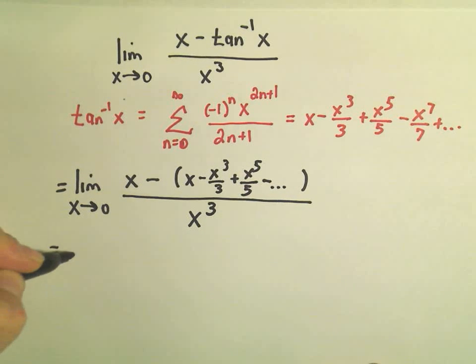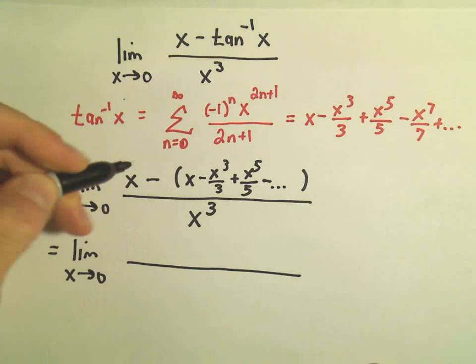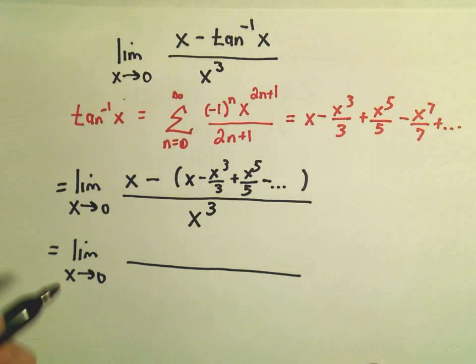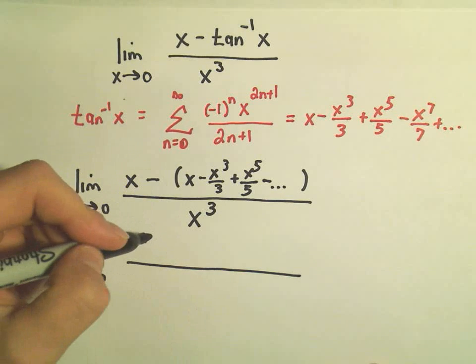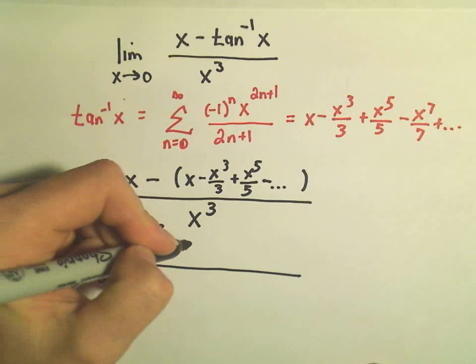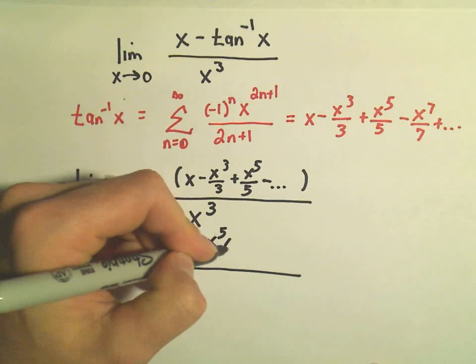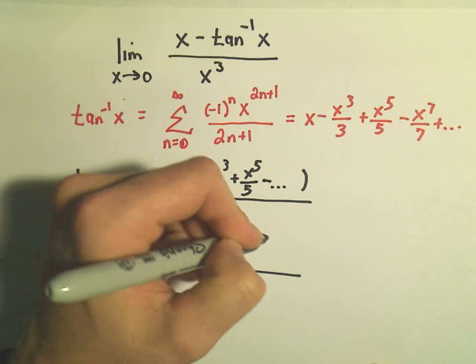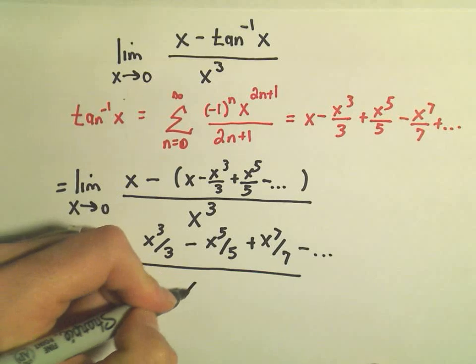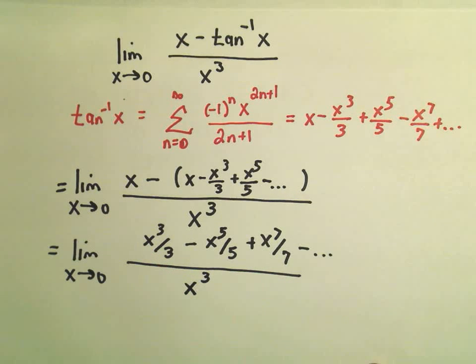And all I'm simply going to do is just do a little bit of algebra in the numerator. So we could take the x minus the x, and then that would cancel. And then if we distribute the negative, it looks like we would have positive x to the 3rd over 3, negative x to the 5th over 5. It would become positive x to the 7th over 7, etc. We still have our x to the 3rd in the denominator.